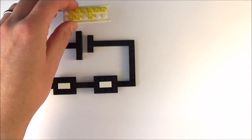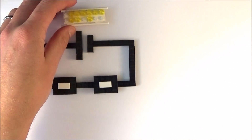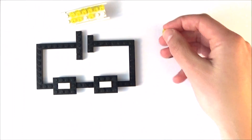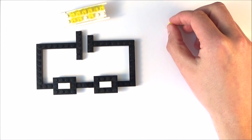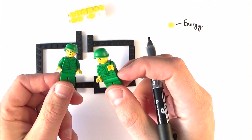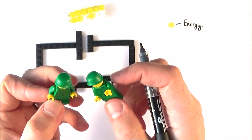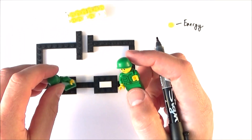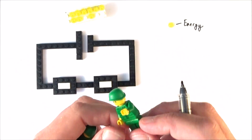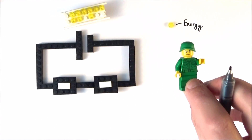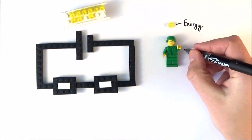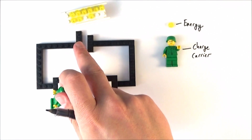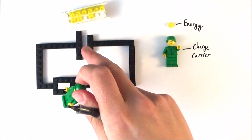For this analogy, which isn't perfect, I'm going to think of my source of EMF as my energy source. I'm going to represent energy with these small bits of Lego down here. Moving around the circuit we have a lot of charge carriers, and what they're going to be doing is transferring energy from the cell to the various components within it. These figures here are going to be the charge carriers, and for this analogy I'm going to assume that these are moving from the positive end of the cell around the circuit to the negative end.